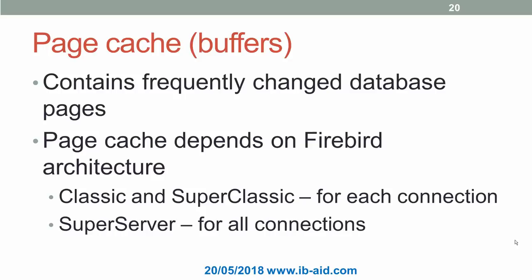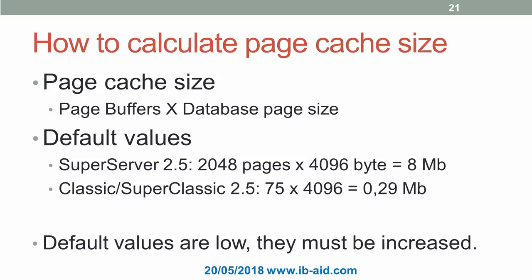Page cache allocation also depends on Firebird architecture. For Classic and SuperClassic, the specified number of database pages will be allocated for each client connection, and for SuperServer, for all connections. In order to calculate the actual memory usage for the page cache, multiply the specified number of page buffers by the page size of the database.